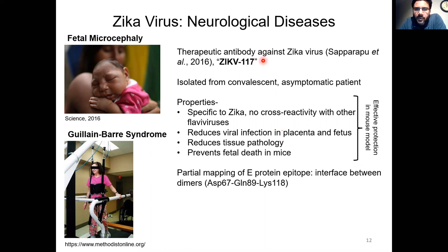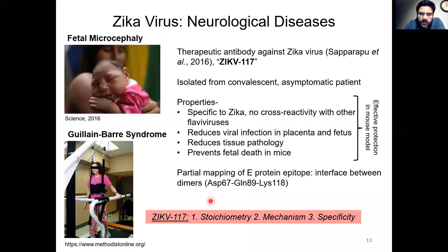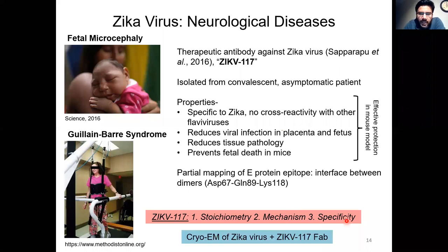This antibody was found to provide effective protection against the virus in a mouse model of disease. Our collaborators partially mapped the epitope of this antibody onto the Zika virus E-protein using mutagenesis. Despite these advances, three important questions remained unanswered: what is the stoichiometry of binding of the antibody on the Zika virus surface, what is the mechanism by which the antibody neutralizes infections, and what is the molecular reason behind the specificity of this antibody to the Zika virus?